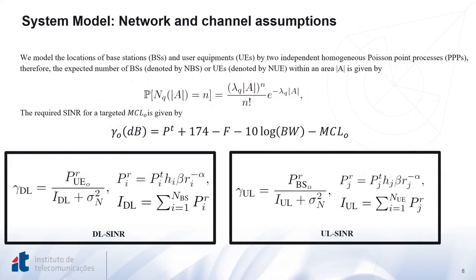The system model we consider to find the optimal number of repetitions is based on characterizing the SNR in both downlink and uplink scenarios. We started by modeling the base stations and user equipments as two independent homogeneous Poisson point processes, where the probability mass function is given by the following formula. Based on the required SNR, computed using the maximum coupling loss formula, we characterized the SNR for both downlink and uplink scenarios to determine how far we are from achieving the required SNR and thus the optimal repetition factor. The numerator in both cases represents the received signal power, while the denominator represents the inter-cell interference plus noise power.